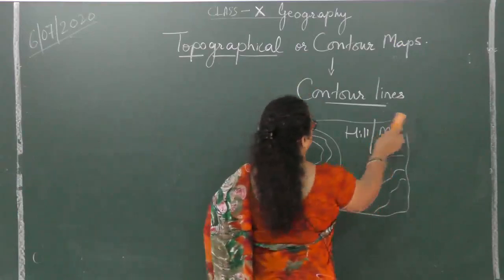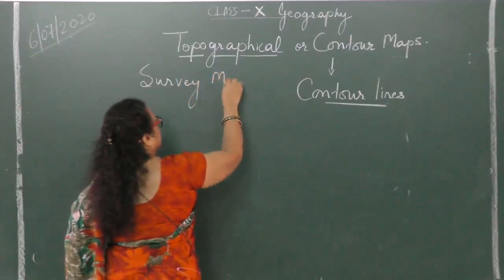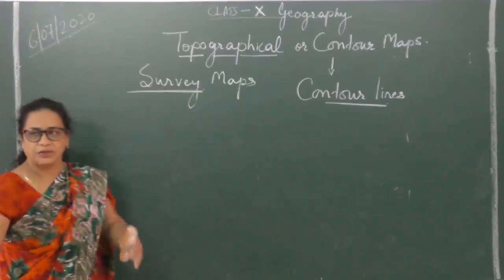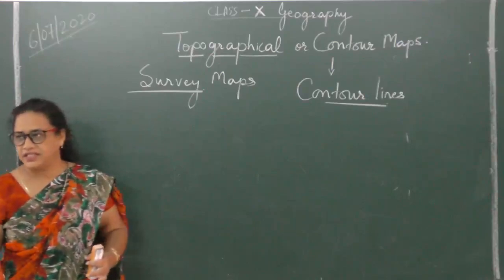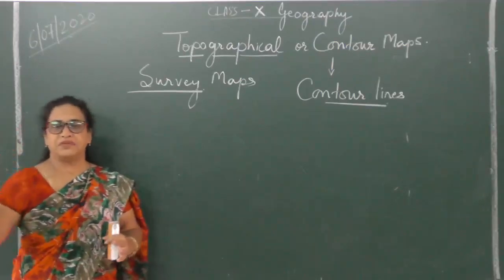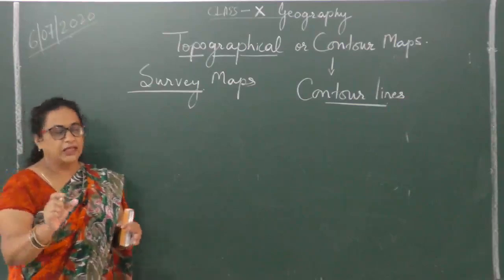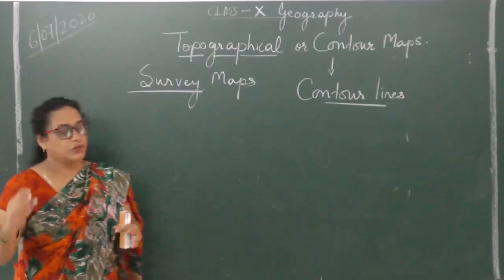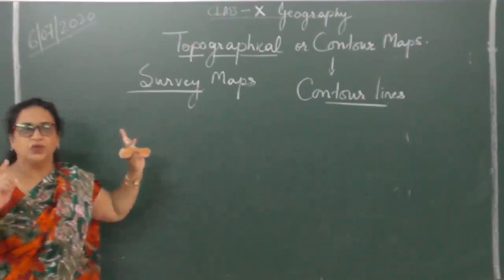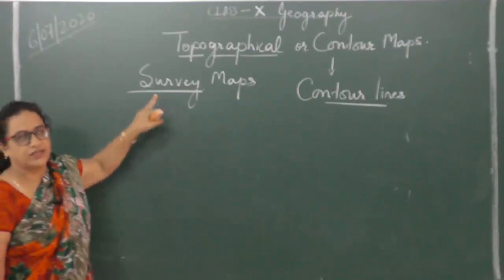One more name — we also call them survey maps. The meaning of 'survey' is to go to a place, travel to a particular area and see everything in detail. When making a map, we measure the distances of places — accurate measurement is taken, reduced according to a chosen scale, and the map is drawn on paper. Topographical or contour maps have been drawn by cartographers — people who draw maps — only after the work of surveying has been done. That is why they are very, very accurate.